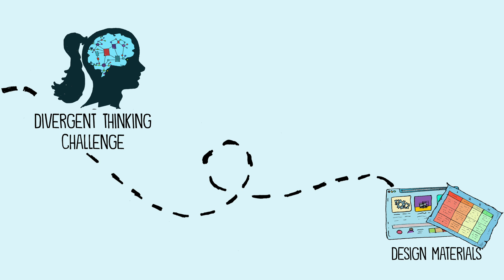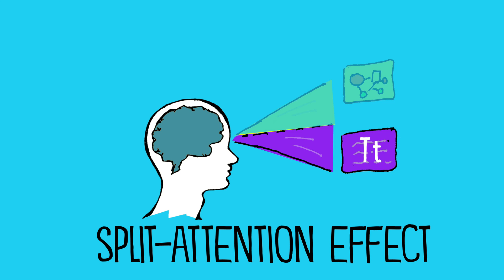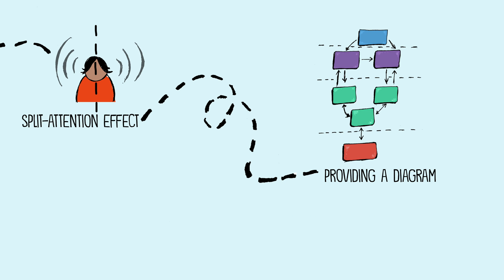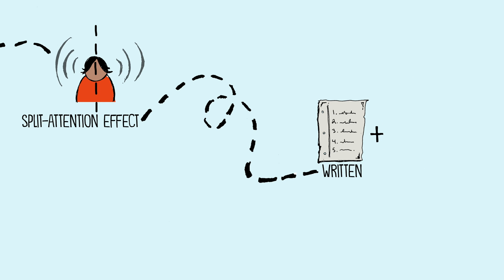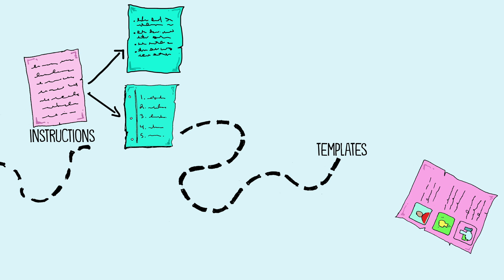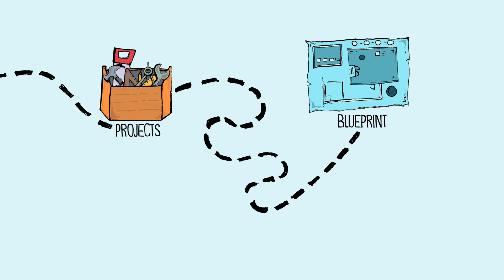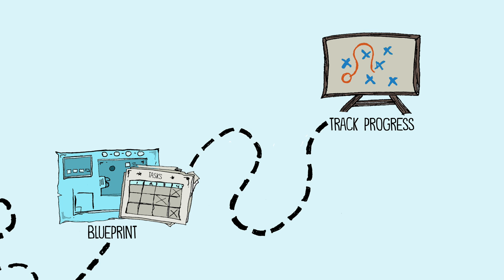Number three: design your instructional materials to reduce the split attention effect. The split attention effect occurs when students must divide their attention between two sources of information, like a diagram and a text. When you provide a diagram, place the text on the diagram itself instead of below or beside it. When giving directions, combine written and audio instructions and break them into bullet points or numbered lists. You might also use templates with clear visuals to create predictability, or a general blueprint or to-do list for students to track their progress.